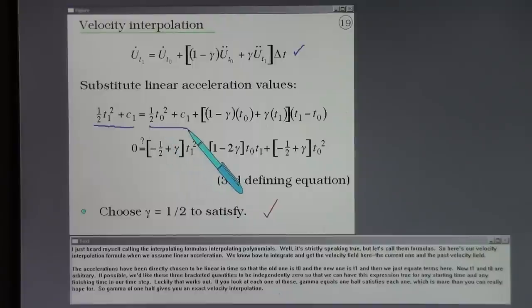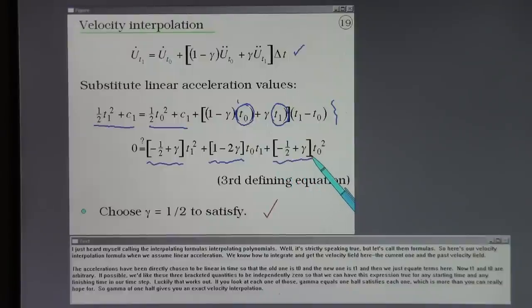The question is how do our interpolating formulas fare in this situation? Here's our velocity interpolation formula. When we assume linear acceleration, we know how to integrate and get the velocity field here. The current one and the past velocity field. The accelerations have been directly chosen to be linear in time. So the old one is t0, the new one is t1. And then we just equate terms here. Now t1 and t0 are arbitrary. If possible we'd like these three bracketed quantities to be independently zero, so that we can have this expression true for any starting time and any finishing time in our time step. Luckily that works out. If you look at each one of those, gamma equals one half satisfies each one. Which is more than you could really hope for. So gamma of one half gives you an exact velocity interpolation.